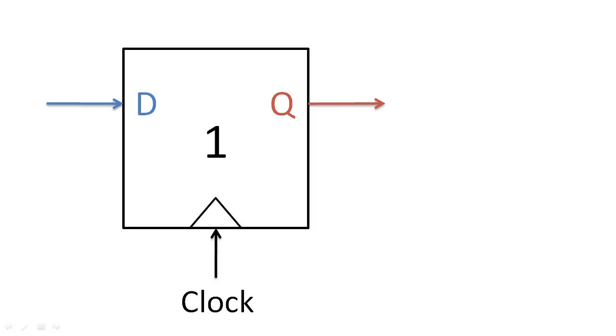The second type of input is called the data input. This input determines how the state of each flip-flop updates every clock edge.